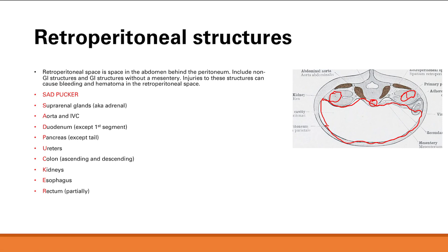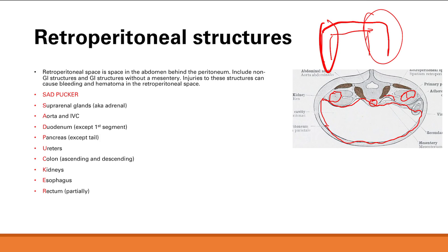The duodenum — the very first segment; duodenum has four segments — the very first segment actually pokes out and is retroperitoneal. The pancreas as well — all of it except for the tail is retroperitoneal. You have ureters that come from the kidneys, so the kidneys and ureters are retroperitoneal. Your ascending and descending colon are also retroperitoneal — so those are not in the bag. There's an ascending colon, a transverse colon, and a descending colon, and the ascending and descending parts are not in that bag of peritoneum.